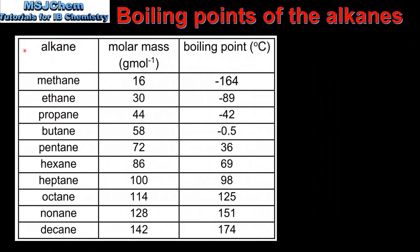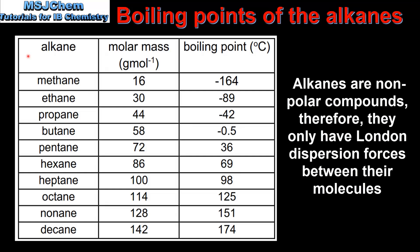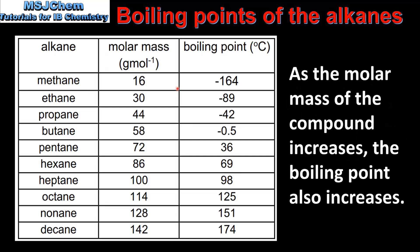We'll start by looking at the first factor: molar mass. In this table we can see the boiling points of the first 10 members of the alkane homologous series, starting with methane with 1 carbon atom up to decane with 10 carbon atoms. The molar mass increases as the number of carbon atoms increases, and we can see that as the molar mass increases, the boiling point also increases.